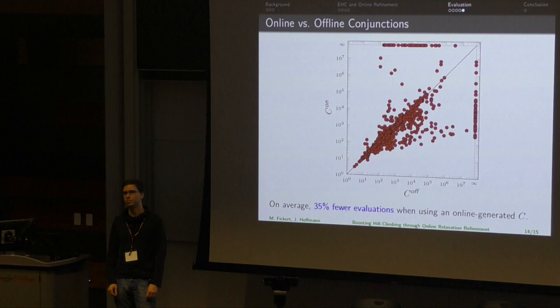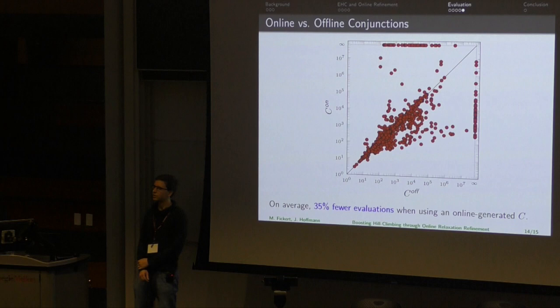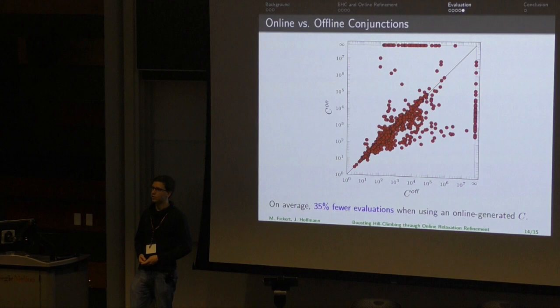Q: You were showing results on success rate within a half-hour window — when you say it solved the problem, that was with a 30-minute timeout. Do you have results or insights into whether you find problems faster than other planners? A: I would have to look that up — that would be an interesting metric to look at.